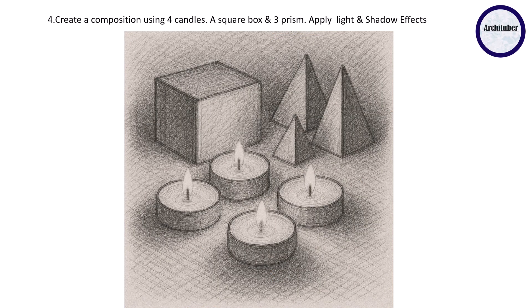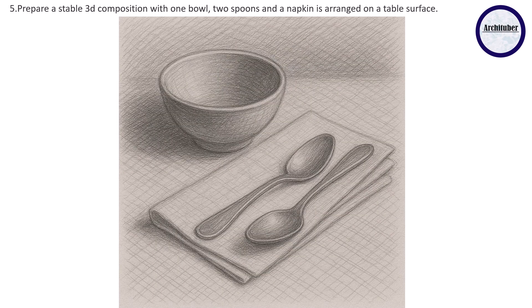Fourth question: create a composition using four candles, a square box and three prisms, apply light and shadow. It's a very simple kind of composition. If you see they've shown four candles with shadows. They've used scribbling pattern to it rather than showing a proper blending. So try this also.